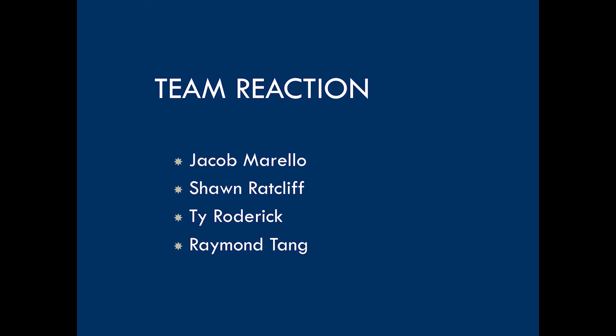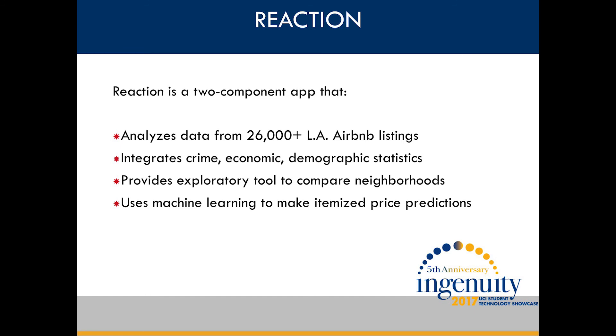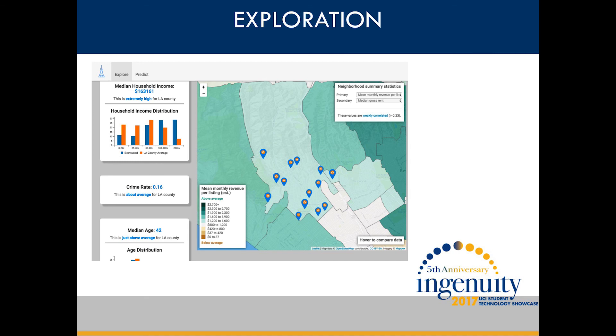My name is Sean Ratcliffe, and I'm here on behalf of Team Reaction. We're excited to present a data analysis application based on Airbnb data. Airbnb is a website where you can rent out anything from a spare couch to a beach house. More than 150 million people to date have signed in and stayed in Airbnbs. My team built a tool to help new Airbnb hosts understand the marketplace. We used data from over 26,000 Los Angeles listings combined with local crime, economics, and demographic data. Our app has two main components: exploration and prediction. For exploration, our app has an interactive visualization — for example, users can overlay crime data on top of local prices and examine aggregated listing features in specific neighborhoods.